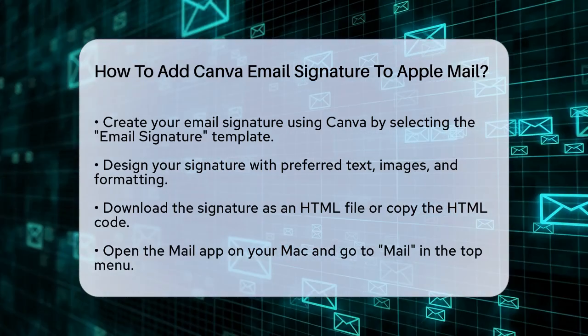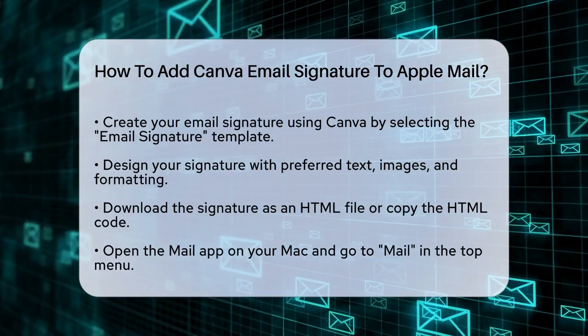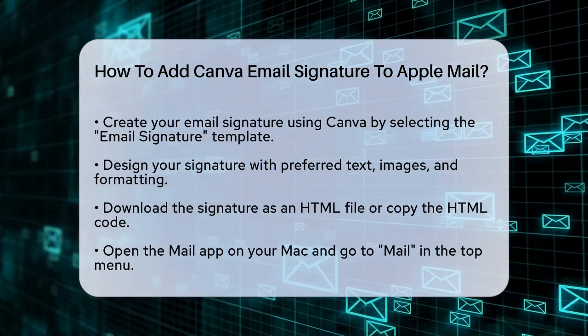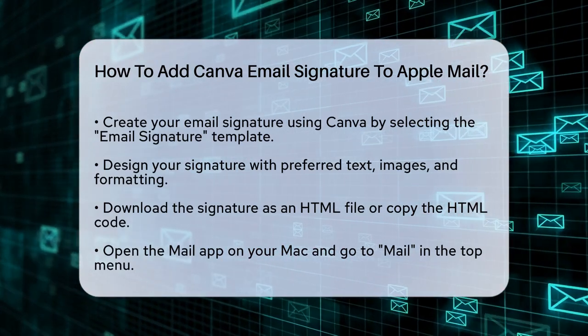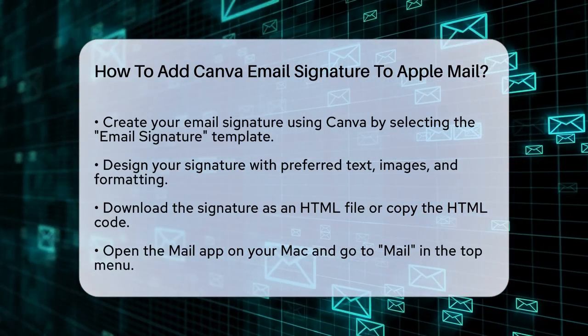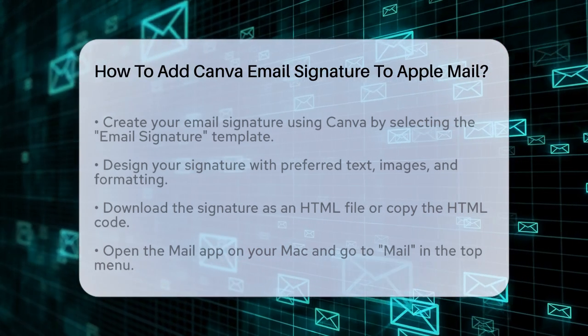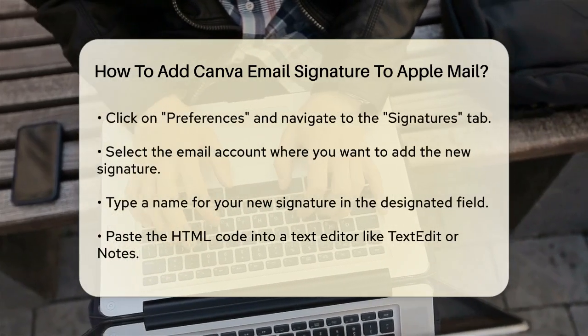Next, open the Mail app on your Mac. Go to the top menu and select Mail, then click on Preferences. In the Preferences window, navigate to the Signatures tab.